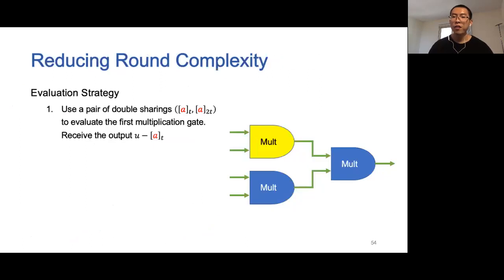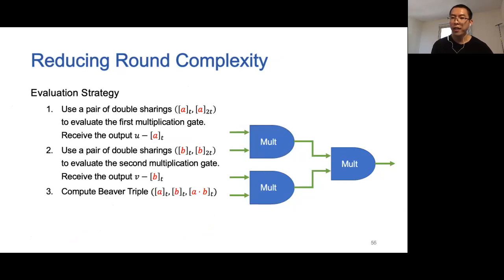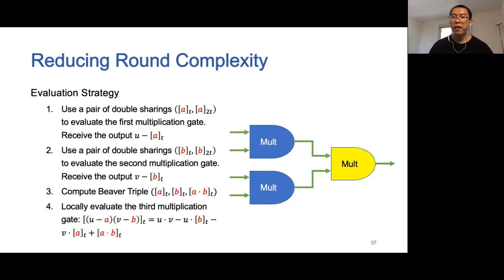In summary, our evaluation strategy works as follows. All parties first use a pair of random double sharings to evaluate the first multiplication gate. Then all parties use a different pair of random double sharings to evaluate the second multiplication gate. In the meantime, all parties use the sharing a from the first pair of double sharings and the sharing b from the second pair to prepare the Beaver triple for the second layer. Note that these three steps can be done at the same time. Finally, all parties can locally evaluate the multiplication gate in the second layer with the help of the Beaver triple. In conclusion, all parties can evaluate a two-layer circuit in parallel.